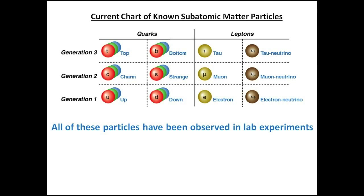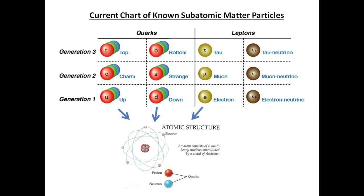These are the currently known subatomic matter particles, made up of two classes: quarks and leptons. Quarks feel the strong nuclear force field and several quarks compose the proton and neutron. Leptons, however, do not feel the nuclear force and are not observed in the nucleus of the atom. All of these particles have been observed in laboratory experiments.